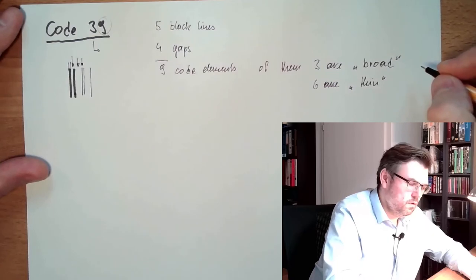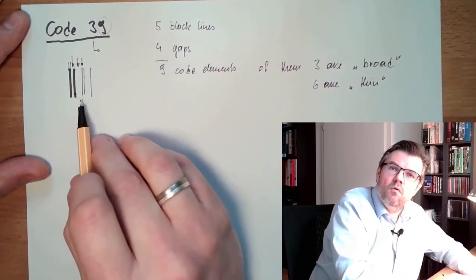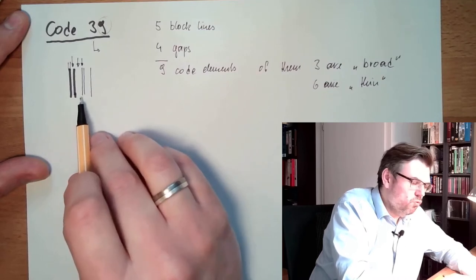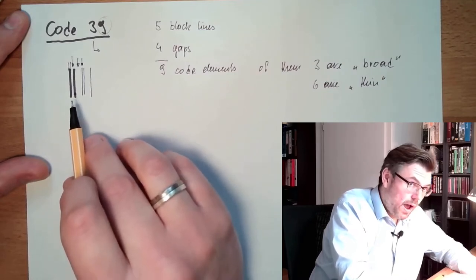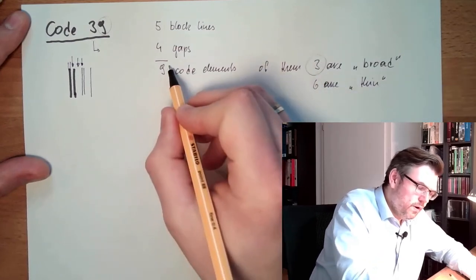If there are two broad lines, there's only one broad gap. If there are two broad gaps, there's only one broad line. This is why it's Code 39.